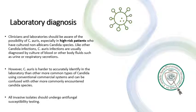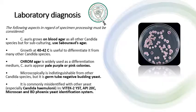Like other Candida infections, Candida Auris infections are usually diagnosed by culture of blood or other body fluids such as urine or respiratory secretions. However, Candida Auris is harder to accurately identify in the laboratory than other more common types of Candida using conventional commercial systems, and can be confused with other more commonly encountered Candida species. Therefore, all invasive isolates should undergo antifungal susceptibility testing. Regarding specimen processing, Candida Auris grows on blood agar as all other Candida species, but for subculturing, use Sabouraud's agar. Growth at 40 to 42°C is useful to differentiate it from many other Candida species. Chromagar is widely used as a differentiation medium, and Candida Auris appears as pale, purple, or pink colonies.